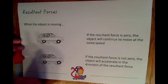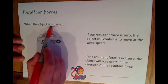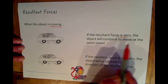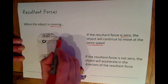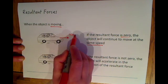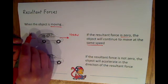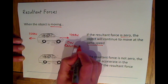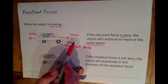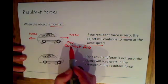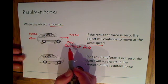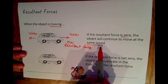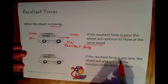The other scenario is when the object is already moving. Again we have two cases. If the resultant force is zero, the object will continue to move at the same speed. For example, if a moving car had a forward force of 100 newtons and a force in the opposite direction of 100 newtons, the resultant force would be zero newtons. In that case the object doesn't stop — it's still moving, but at a constant speed.